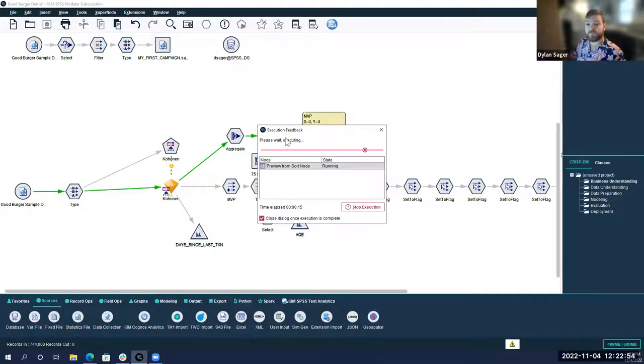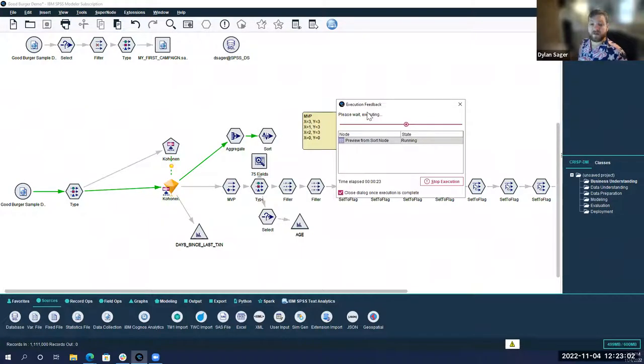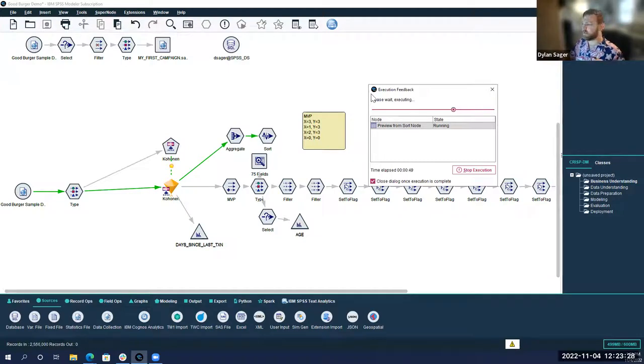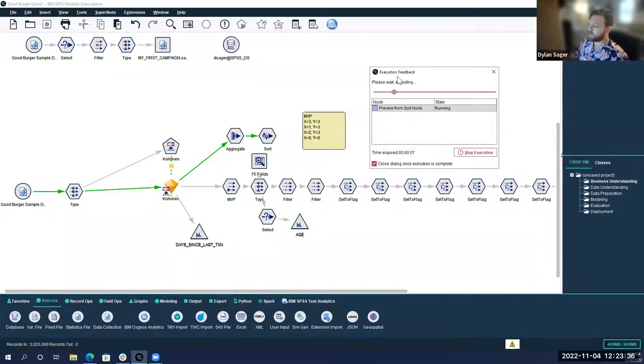Based on recency, frequency, monetary, very common metrics used in CPG. How recent did a customer come in, how much did they spend, and how many transactions do they have over their lifetime? And identify the highest value groupings. Those are the ones we really want to focus on. You can get your high spenders to keep coming in, they're likely to continue to spend high. You can get your high frequency customers to spend a little bit more. If you can get your most recent customers to keep coming in, you'll increase their frequency.